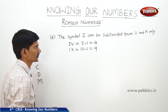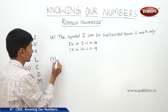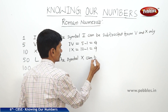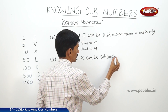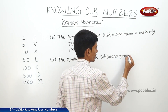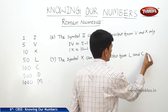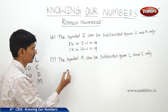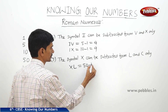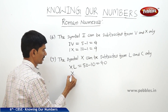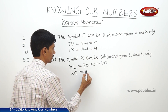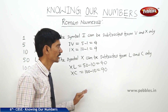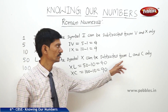The seventh rule is: the symbol X can be subtracted from L and C only, meaning X should be subtracted only from L and C. For example, XL means 50 minus 10 equals 40, and XC means 100 minus 10 equals 90. The symbol X cannot be subtracted from any other symbols other than L and C.